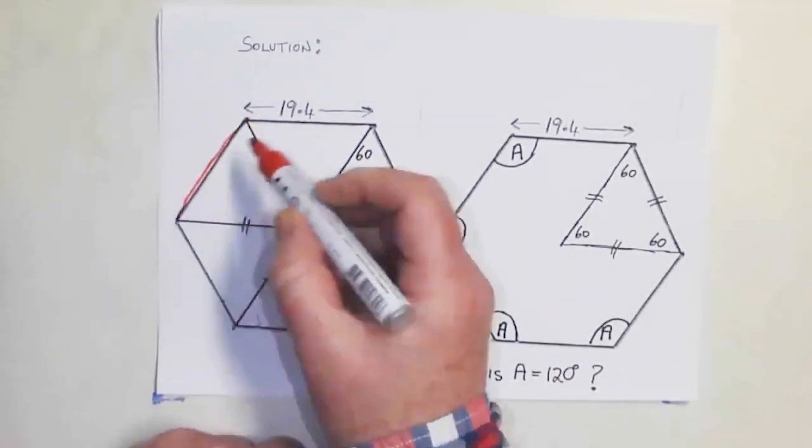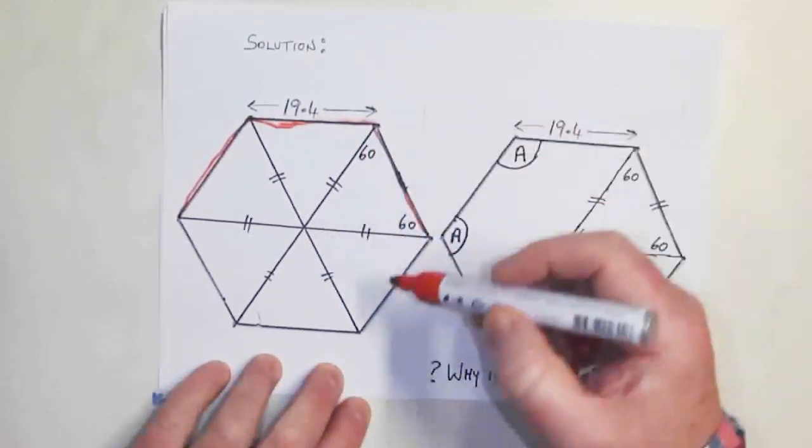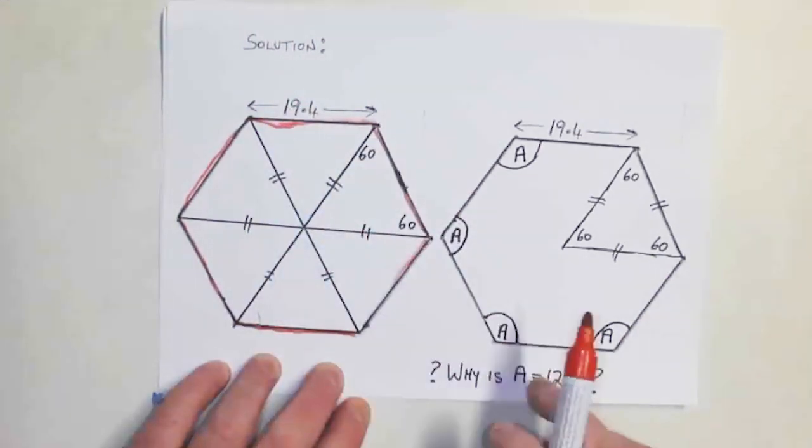Here's the hexagon, look, that and that and this and this and that. There's six sides and they're all 19.4.